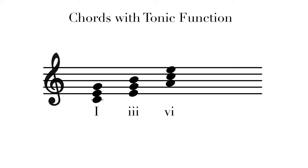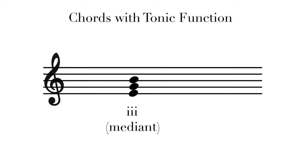There are also two other diatonic chords that are not the tonic chord, but have what we call tonic function. Those are the III and the VI chords. The III is often called the mediant, because it's halfway between the I and the V. In a major key the III chord is minor, but in a minor key the III chord is major. There's a close relationship between the I and the III chord, because they share two notes.